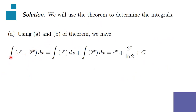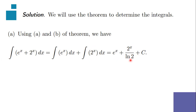The given is the integration of the quantity (e to the x plus 2 to the x) dx. We integrate each term by applying the basic integration rule. That's equal to the integration of e to the x dx plus the integration of 2 to the x dx. The integration of e to the x dx is e to the x. Our 2 is A, so we apply a to the x all over ln(a), giving us 2 to the x over ln(2) plus C.